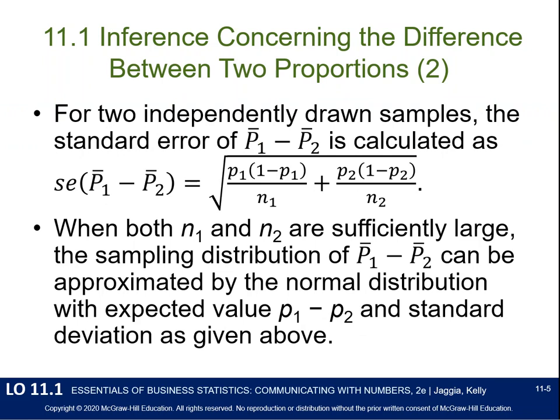The standard error for these two independently drawn samples is going to be the square root of P1 times (1 minus P1) divided by n1, plus the same thing for sample 2. We have to make sure that both sample 1 and sample 2 are sufficiently large so we can assume a normal distribution — we'll test the sample size on an upcoming slide.